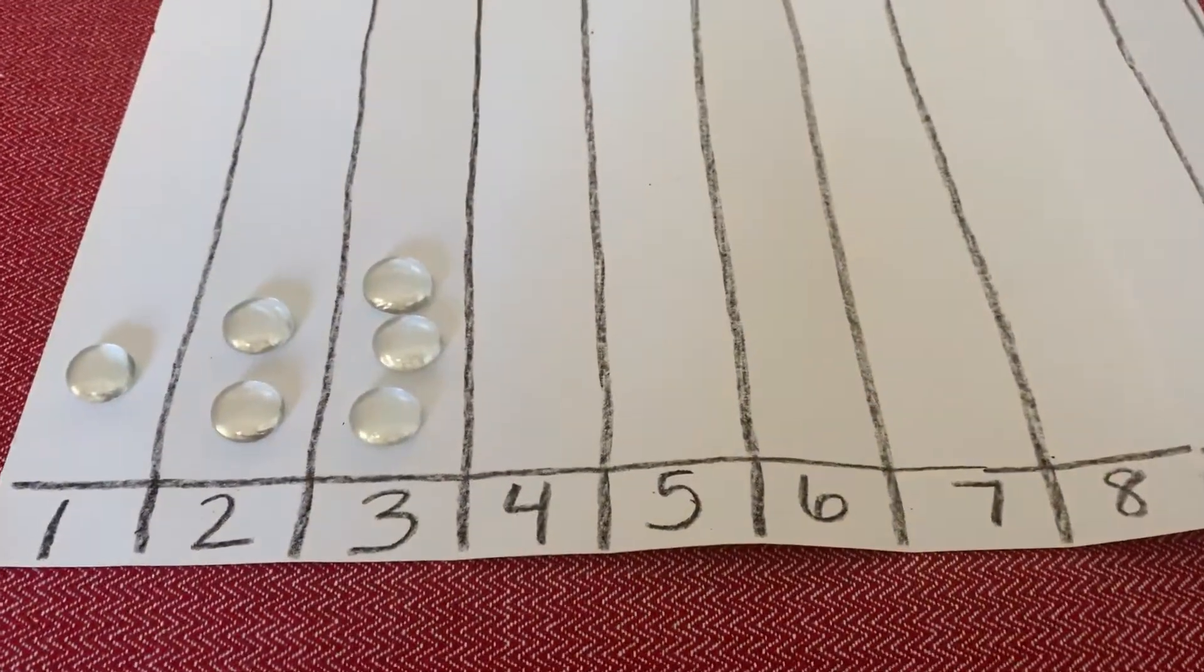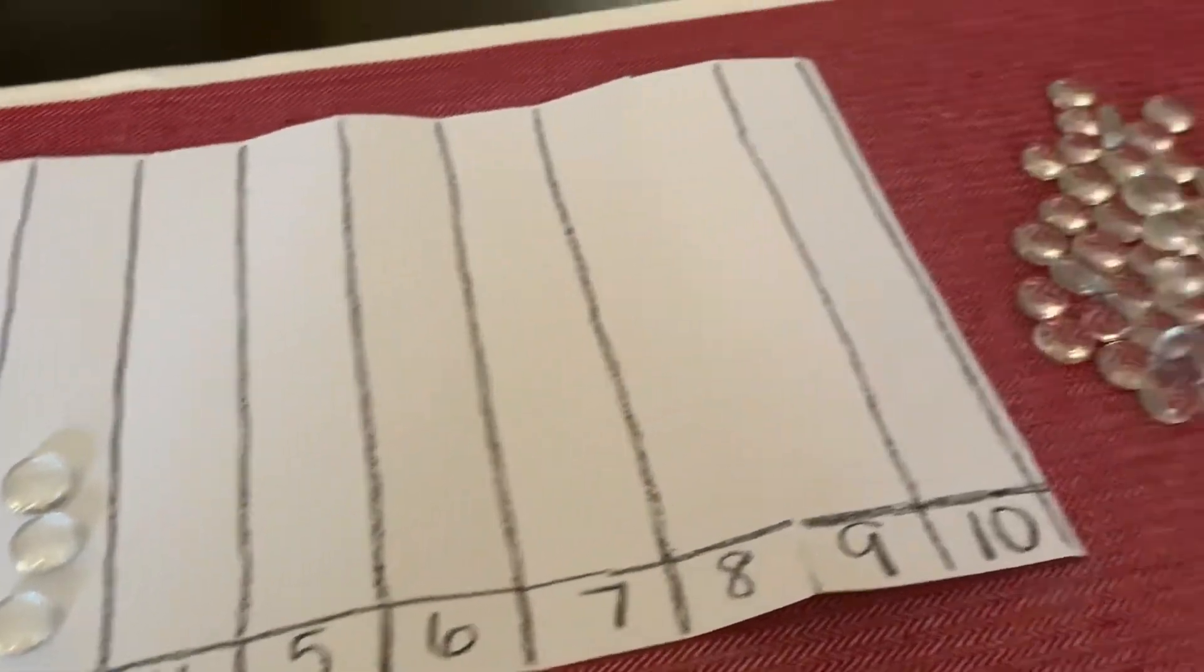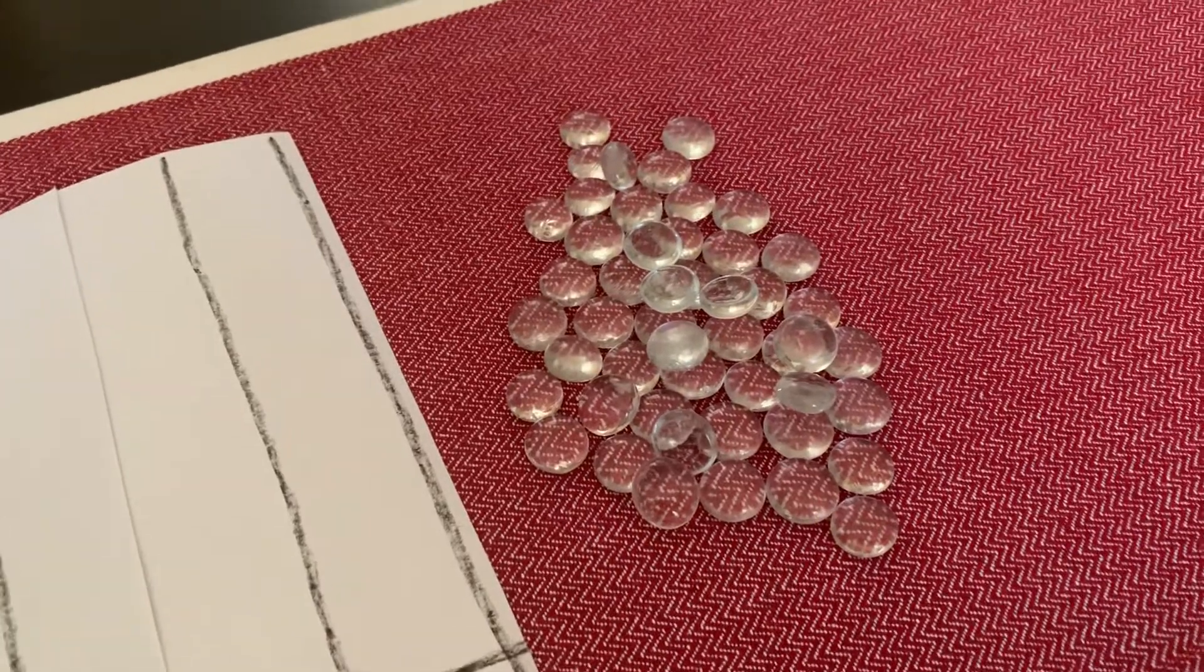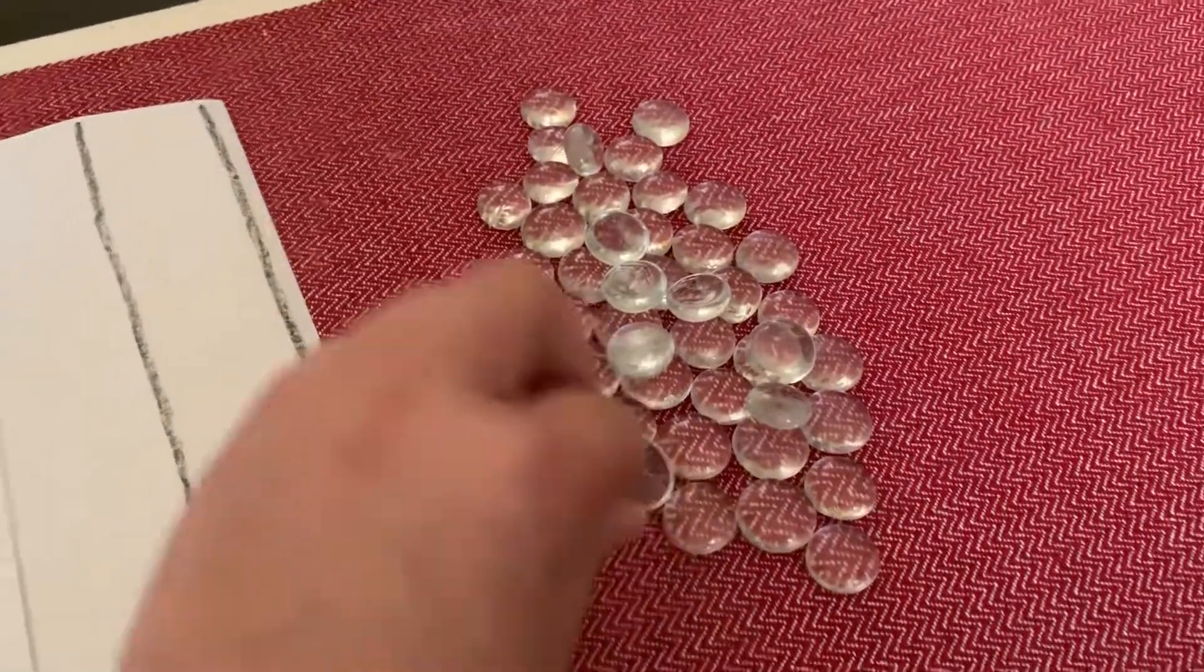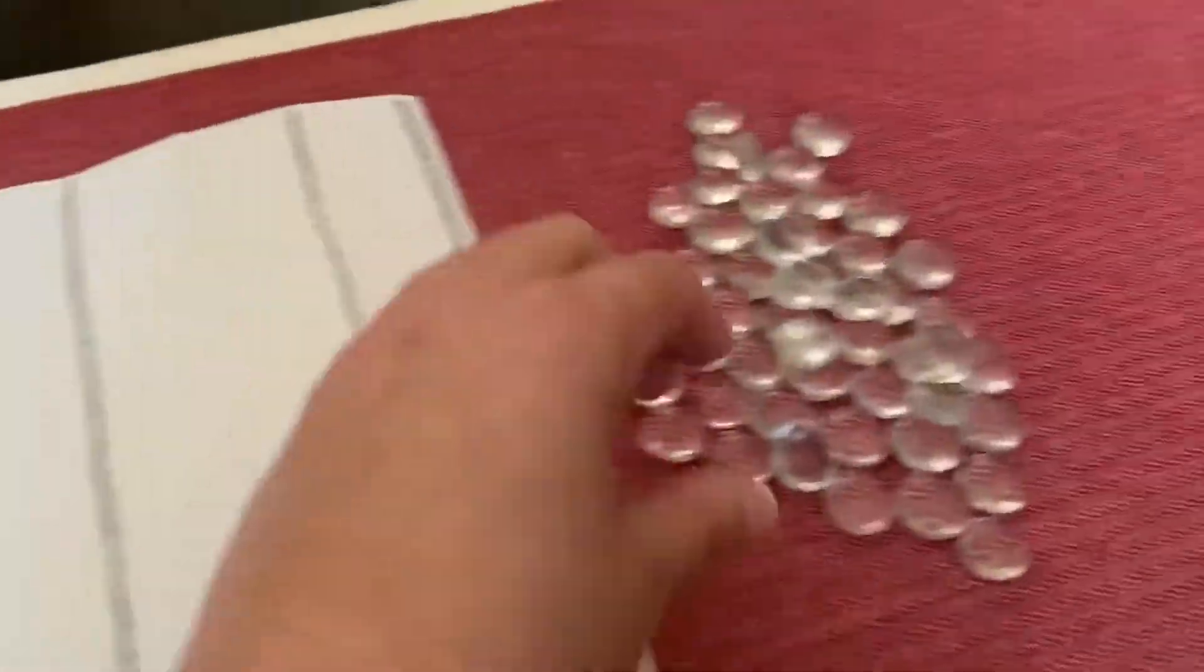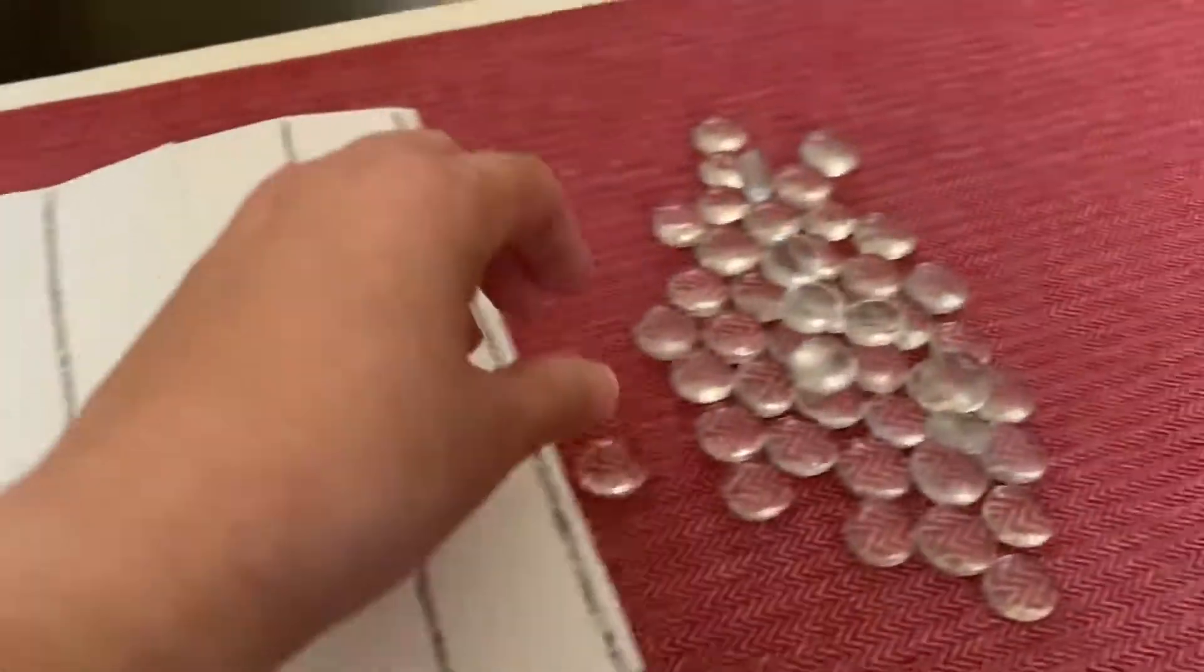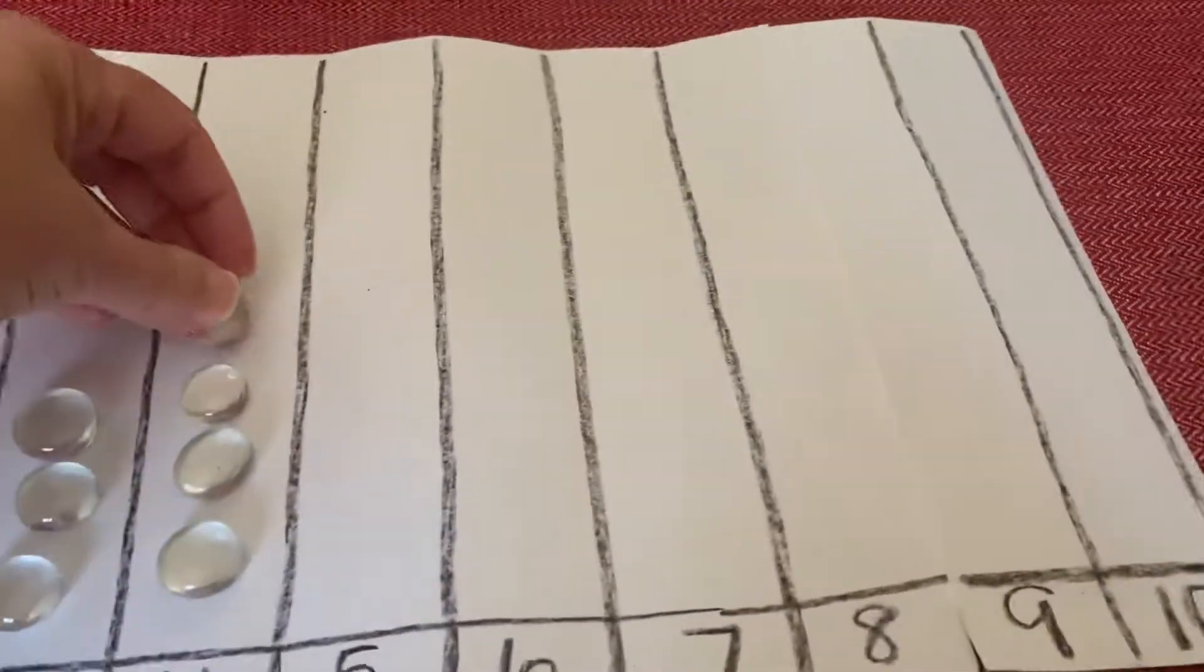All right boys and girls, what number comes next? The number 4. All right boys and girls, so let's count 4 jewels. Here we go. 1, 2, 3, and 4.